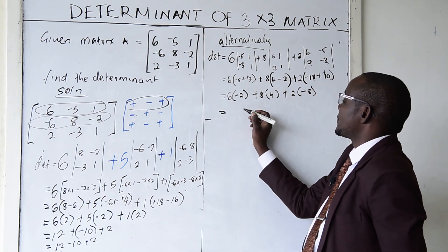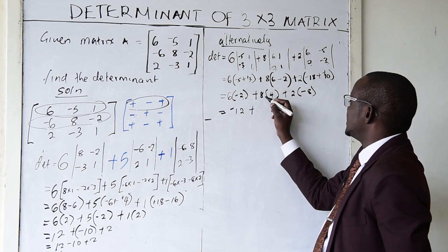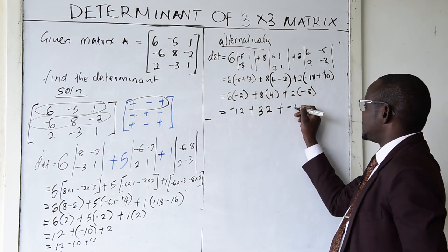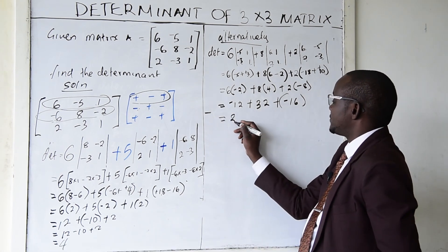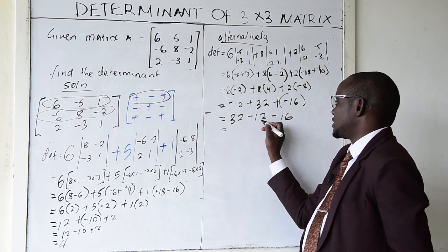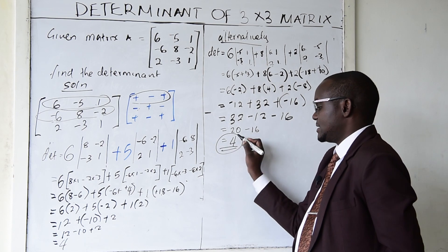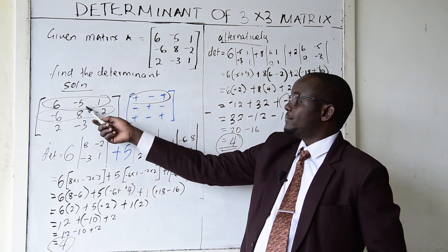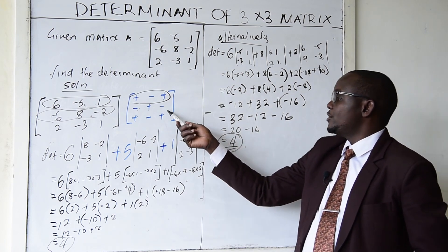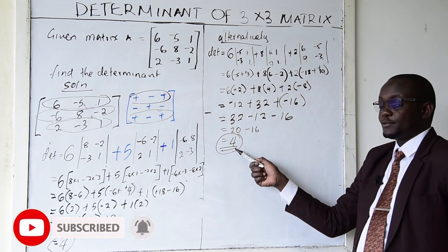Simplifying further: 6 × (−2) = −12, plus 8 × 4 = 32, plus 2 × (−8) = −16. So 32 − 12 − 16 = 4. The determinant is 4, which confirms the same answer as using row 1. This proves that using any row — including the third row — gives the same determinant.